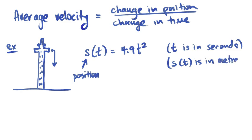So from 0 to 1 second, I can figure out how far this has gone. s(0) is equal to 0. Obviously it hasn't gone anywhere. And s(1) is equal to 4.9.